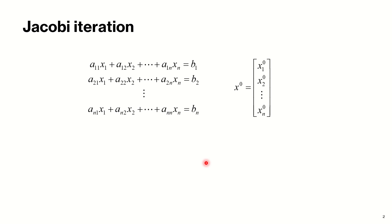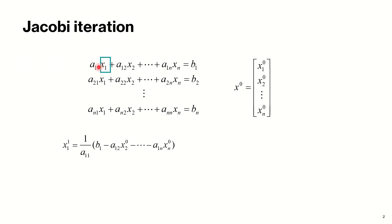Let's suppose we have a system of linear equations which contains n variables and n equations. The first step to use the Jacobi method is to check whether the given system is diagonally dominant. For diagonal dominance, we check the value of diagonal entries when you convert the given system of equations into matrix form. In equation 1, the coefficient a11 in absolute value should be greater than or equal to the sum of the remaining coefficients: |a12| + |a13| + ... + |a1n|.